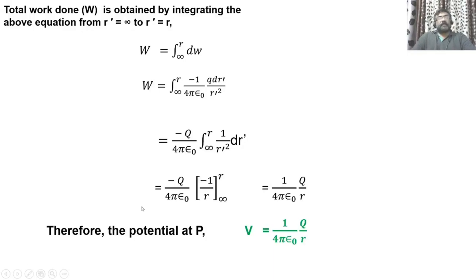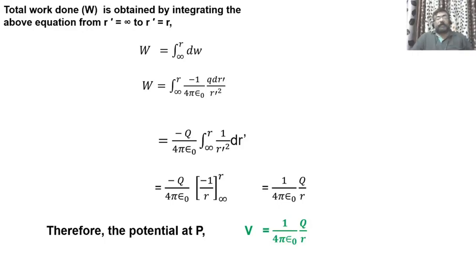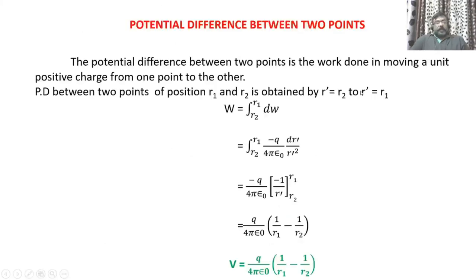we get the work done as 1 over 4π epsilon-naught times Q divided by R. This is the work done by the external agent in bringing unit positive charge from infinity to point P. By definition, that is the potential at that point. Therefore, the electrostatic potential at P is given by V equal to 1 over 4π epsilon-naught times Q divided by R.